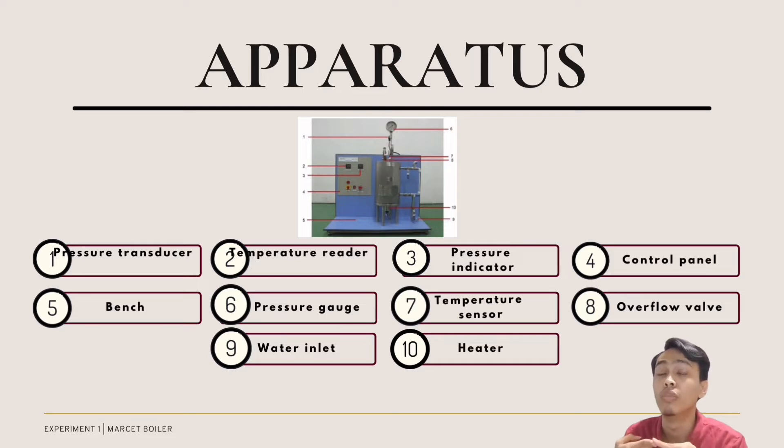Then, the bench will accommodate the Marcet Boiler. The sixth, we have the pressure gauge which shows the pressure in the heater. The seventh, we have the temperature sensor, and then the overflow valve.